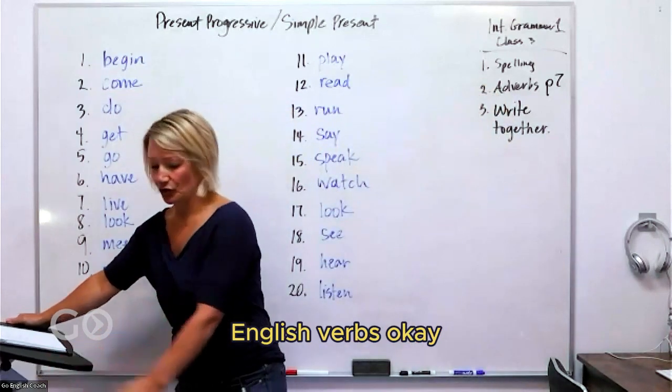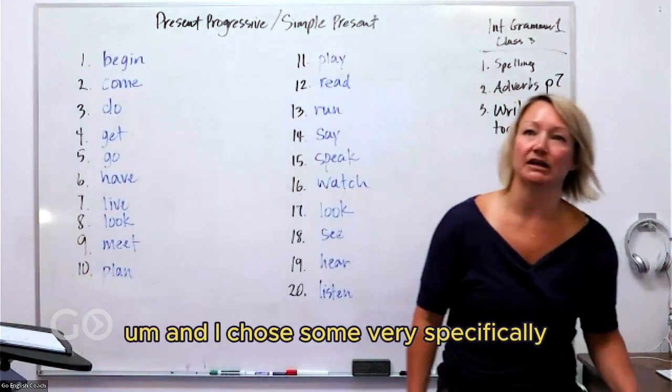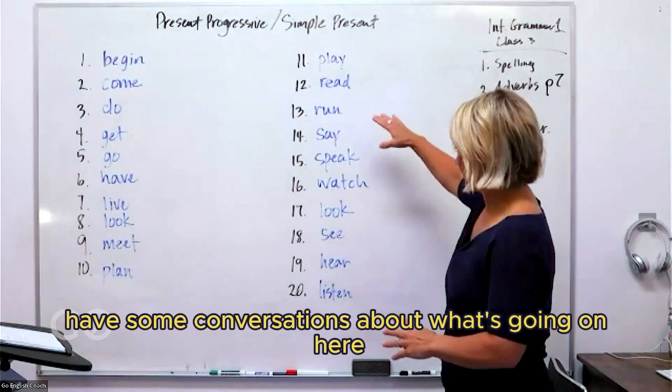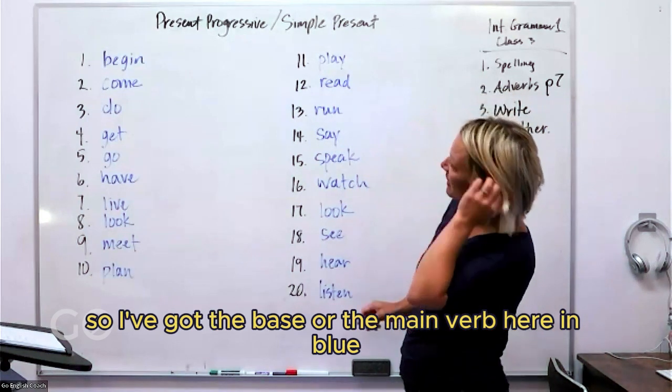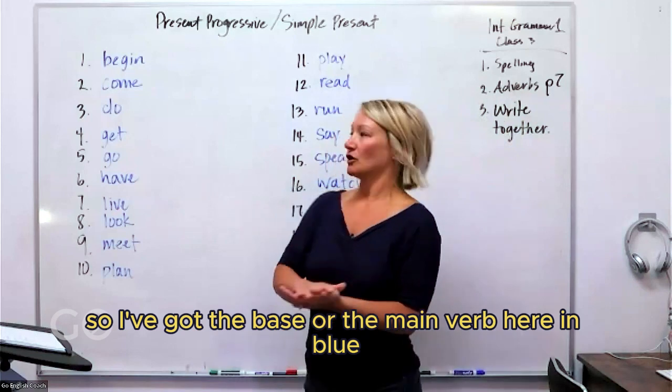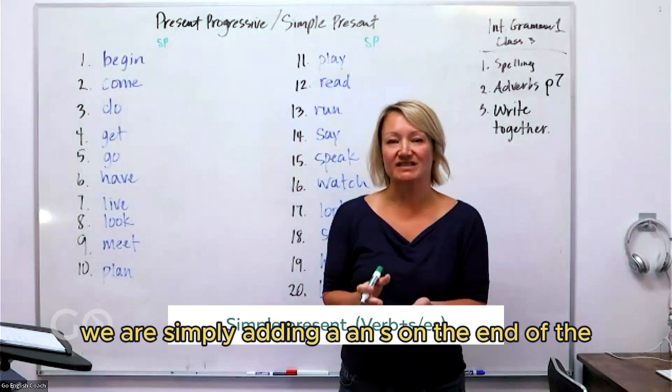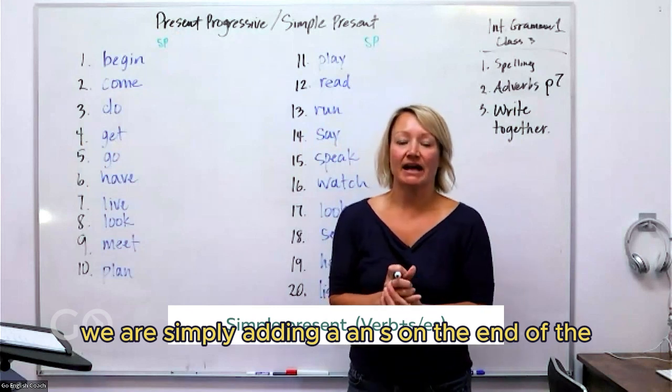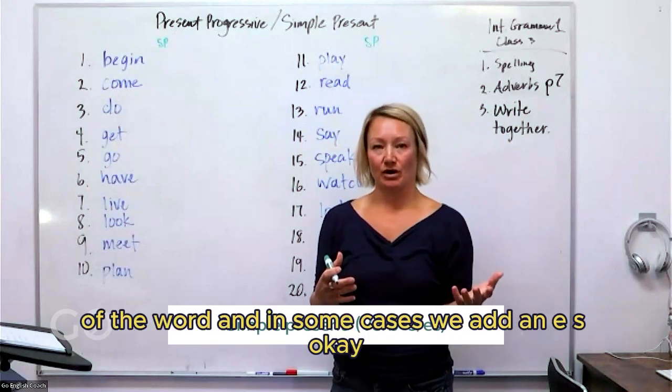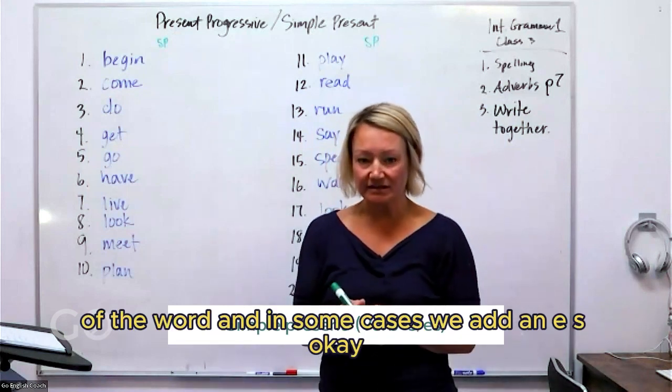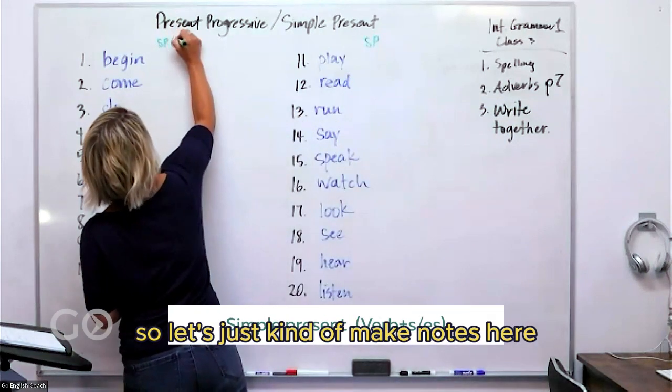About what's going on here. I've got the base or the main verb here in blue. Remember when we're forming the simple present tense, we are simply adding an S on the end of the word, and in some cases we add an ES. Let's just kind of make notes here. So you're going to add S or ES.